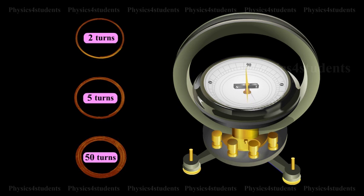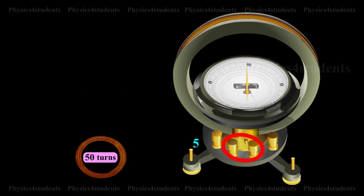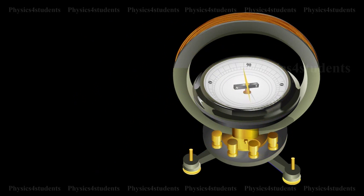Usually, the coil consists of three sections of 2, 5 and 50 turns which are of different thickness used for measuring currents of different length.